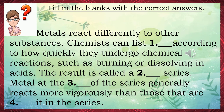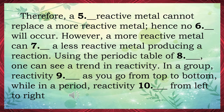Fill in the blanks: Chemists can list metals according to how quickly they undergo chemical reactions, such as burning or dissolving in acids. The result is called a reactivity series. The metal at the top of the series generally reacts more vigorously than those below it. Therefore, a less reactive metal cannot replace a more reactive metal, hence no reaction will occur. A more reactive metal can replace a less reactive metal, producing a reaction. In a group, reactivity increases as you go from top to bottom, while in a period, reactivity decreases from left to right.